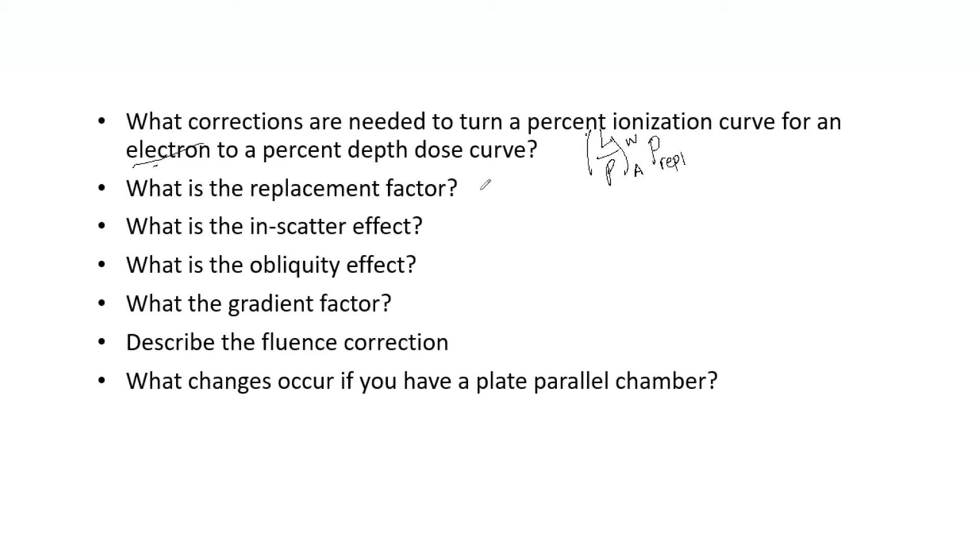So what is the replacement factor, this P replacement? This is essentially dependent on air cavity diameter and mean electron energy. It accounts for in-scatter. The replacement factor accounts for in-scatter, obliquity, and the gradient effect. We're going to talk about those here right now, but it's important to know what this P replacement actually does and the fact that these three things are all built into P replacement.